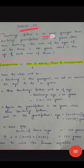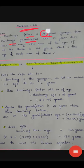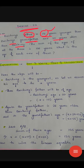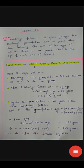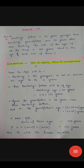Bai Chung's father is 26 years younger than Bai Chung's grandfather and 29 years older than Bai Chung. The sum of the ages of all three — Bai Chung, his father, and his grandfather — is 135 years. We have to calculate their individual present ages. Let us look at the explanation part and things will be more clear for solving this problem.